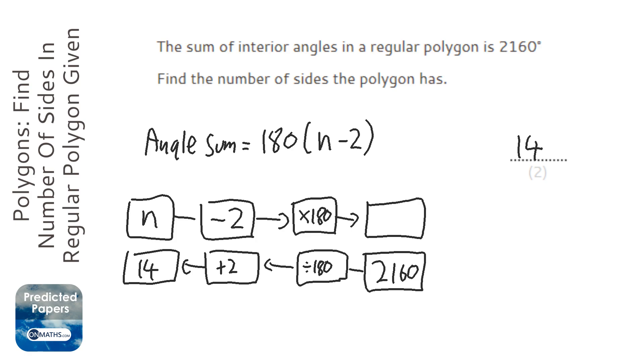So the amount of sides is 14. And you can check that by doing 14 take away 2 times 180 and it should give you the same number in the question which it does.